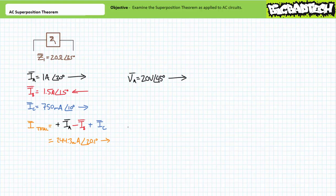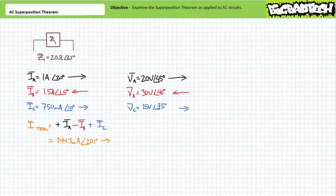Given the assumed current directions, source A would induce a voltage differential of 20 volts at an angle of 45 degrees across the impedance, positive to negative left to right. Source B would induce a voltage differential of 30 volts at an angle of 40 degrees across the impedance, positive to negative right to left. Source C would induce a voltage differential of 15 volts at an angle of 35 degrees across the impedance, positive to negative left to right. The summation of these individual voltage drops would mean this impedance would experience a differential of 4.9 volts at an angle of 45.1 degrees, positive to negative left to right.